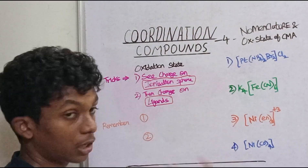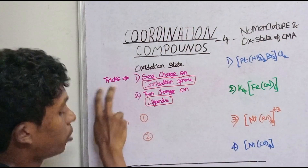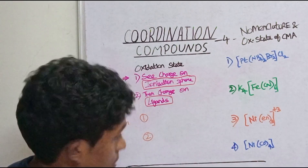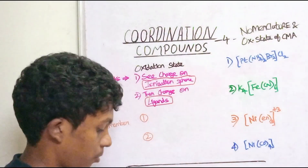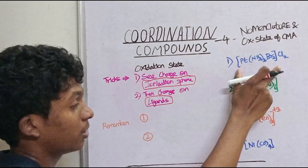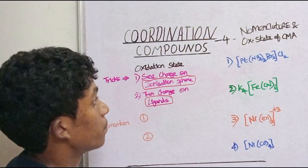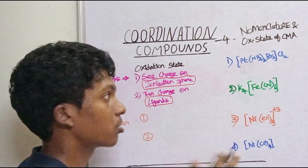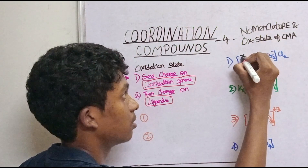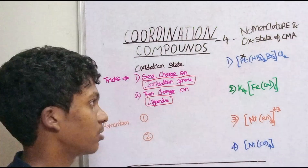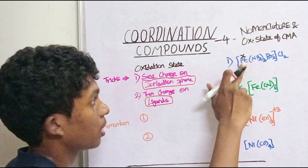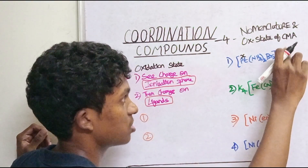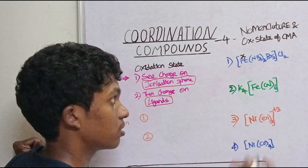We will calculate the oxidation state using two tricks. What is the first trick? See the charge on the ionization sphere. The first trick is to find the charge on the ionization sphere. In the compound, we will record the oxidation state. In platinum, we will record the oxidation state. The ionization sphere has a charge.